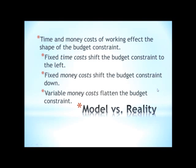And if it's a variable money cost — something that is affected by the number of hours you work — this might be child care, for example: every hour you work, you need to pay somebody for an hour to watch your child. This is just going to flatten the budget constraint by changing the effective wage. You earn a certain number of dollars per hour, and then you pay a certain number of dollars per hour for child care.